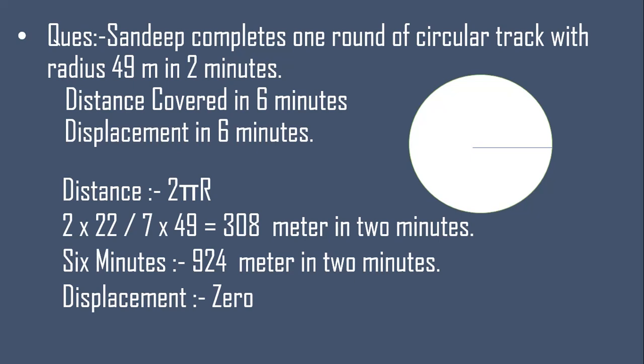So in 6 minutes: 308 × 3 = 924 meters. Now, displacement in 6 minutes? Zero — because initial and final position are the same after completing full rounds. And displacement at exactly 2 minutes is also zero, because the final and initial positions are the same after one full round.